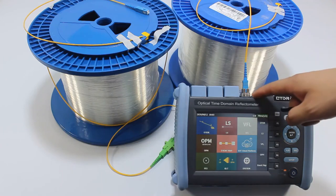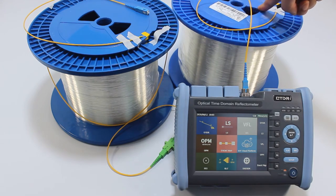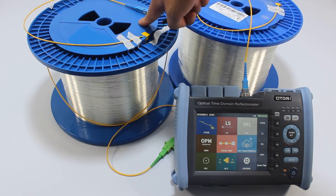Here are OTDR 2 fiber spools. This is 20 kilometers. This is 10 kilometers.